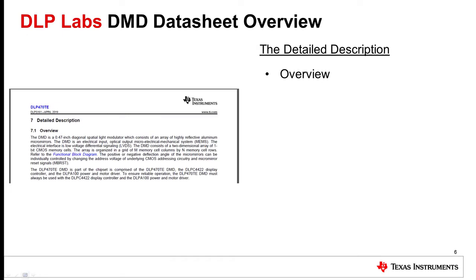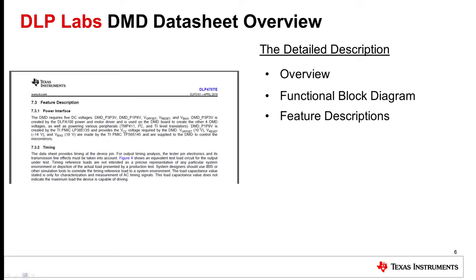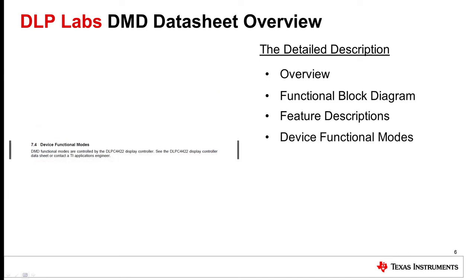Section 7 is the detailed description portion of the document. It has an overview paragraph similar to the description in section 3. The functional block diagram conveys a picture of how data and control signals flow into the DMD. The feature description paragraphs cover the power interface and timing necessary for the device to operate successfully. Device functional modes are controlled by the display controller, not by the device itself; the description of these modes is covered in the display controller datasheet and users guides.